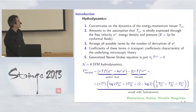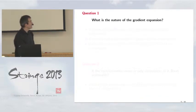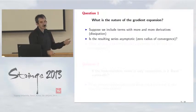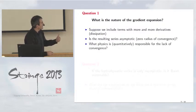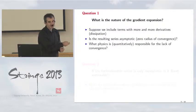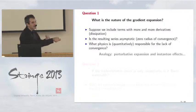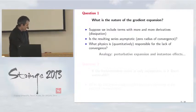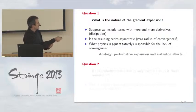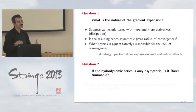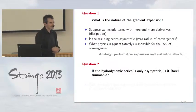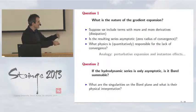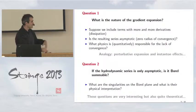The key question we wanted to ask is: what is the nature of this gradient expansion? Suppose we include terms with more and more derivatives — more and more dissipation. Is the resulting series asymptotic? Does it have zero radius of convergence, as is kind of expected? Especially, we would like to see what physics is quantitatively responsible for the lack of convergence — analogous to instantons or renormalons in perturbative expansions. And if the series is asymptotic, is it Borel summable? Can we define Borel-resummed hydrodynamics?